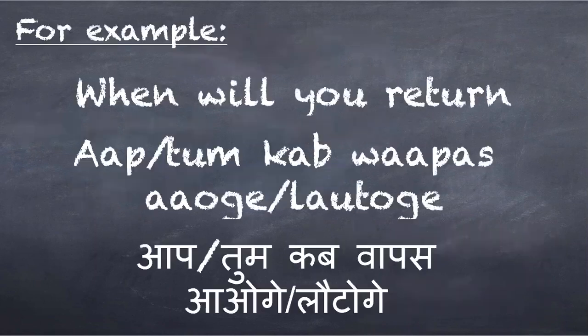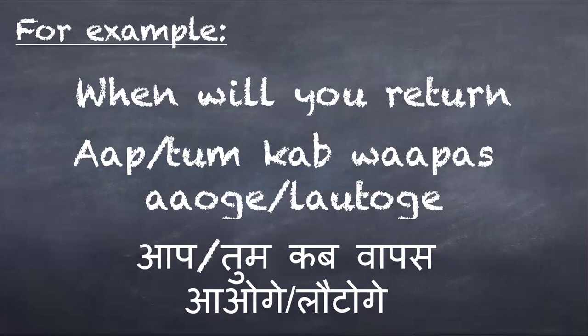Let's take an example: 'When will you return?' Here we are talking about a person, so it is 'aap kab vapas ao ge' or 'aap kab lotto ge'. As discussed in our previous videos, 'aap' is used in more formal conversations or when talking to someone elder or out of respect, while 'tum' is used in casual conversations or when talking to someone younger.